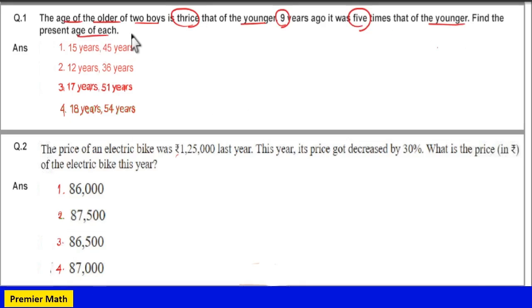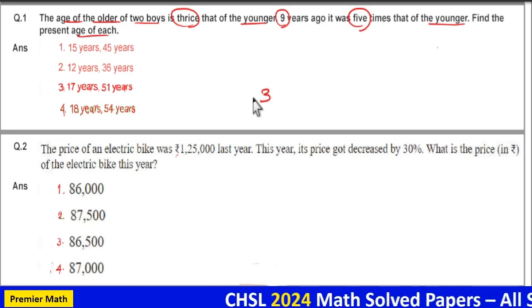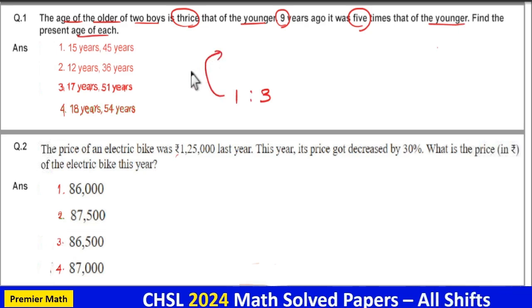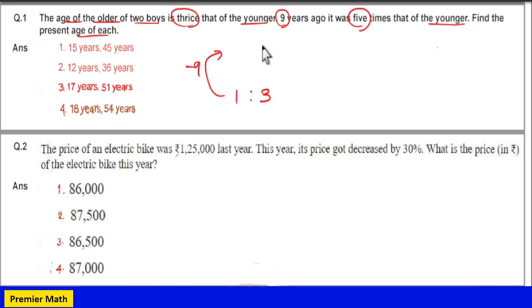Here presently, out of two boys, the older one is 3 times that of the younger one. And 9 years ago, the older one was 5 times older than the younger one.